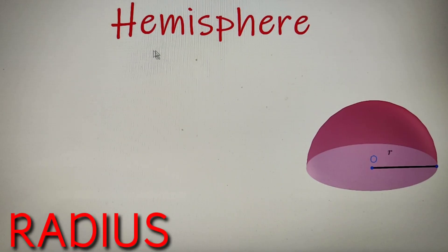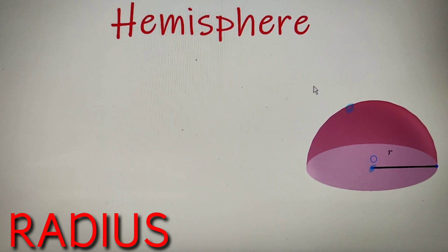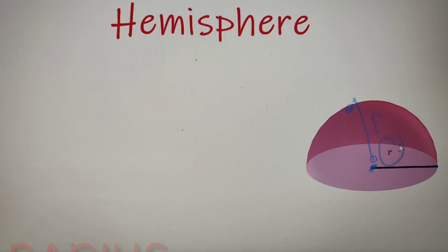To define a hemisphere we simply need a single attribute, and that is the radius of the hemisphere. The radius is the distance between the center of the hemisphere to any point that lies on the circumference of the hemisphere. Joining these two points by a straight line gives the radius, and it is generally represented by the small letter R.